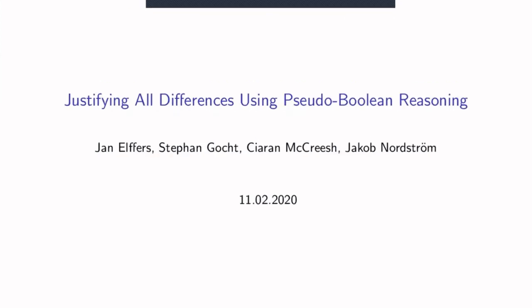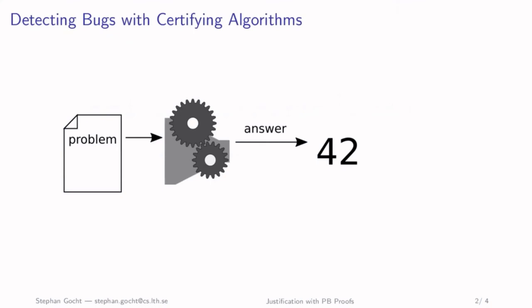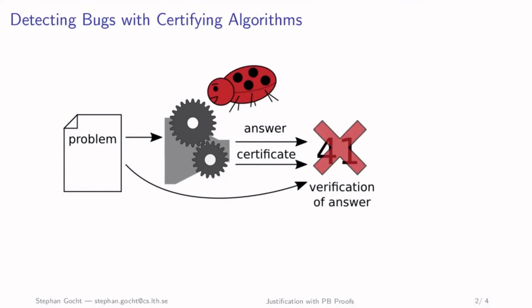Usually you have a problem, your favorite solver answers — say 42 — but in general we don't know if the answer is correct because there could be a bug. To avoid this, you could do extensive testing or try to verify your algorithm, but both take a lot of time. Instead, we have the solver produce a certificate alongside the answer. Then we can take the problem, the answer, and the certificate together and verify it — finding that 41 is not correct, or confirming that 42 is correct.